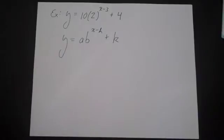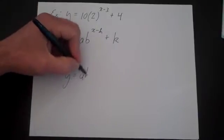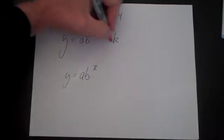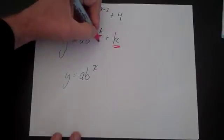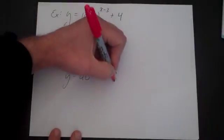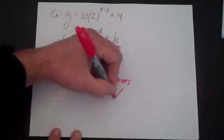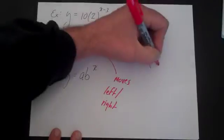If you notice, this is just y equals a times b to the x, the exponential growth or decay form, except for you have an h and a k here. The h, of course, moves it left and right, and the k will move it either up or down. So it's just two transformations.